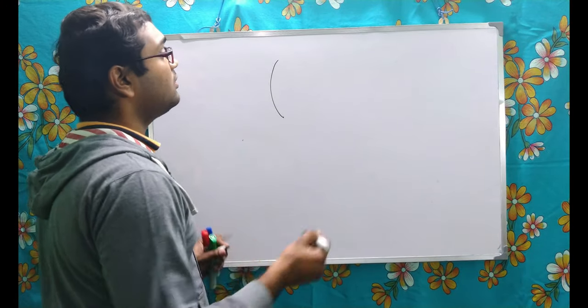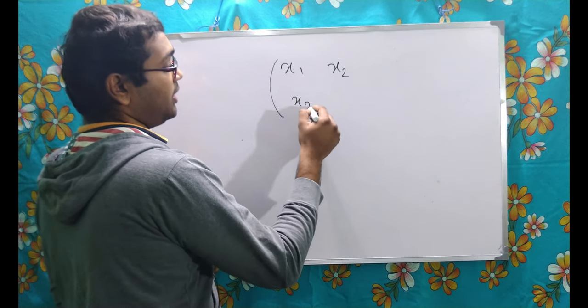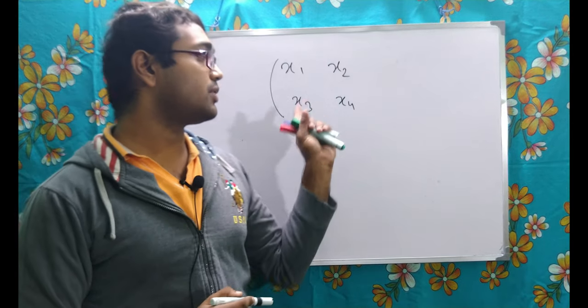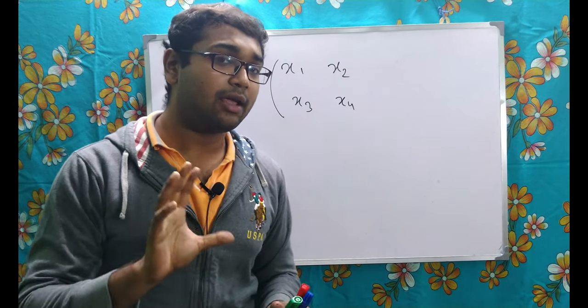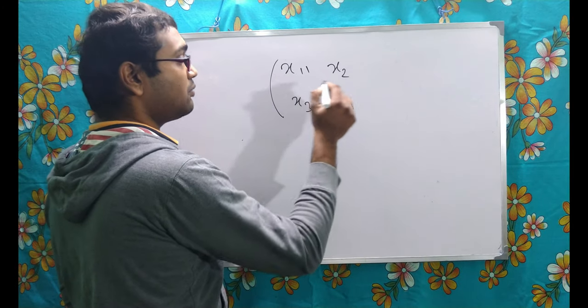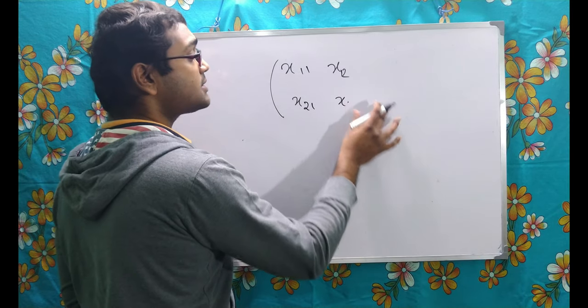So, let us see here let it be x1, x2, x3 and x4. Now, I am noting them as x1, x2, x3, x4 but I can denote them in some other notation also. Let it be x11, x12, x21 and x22.